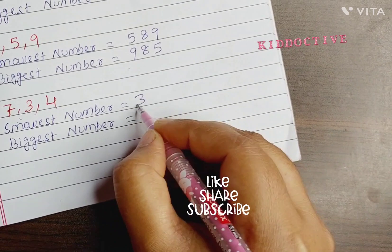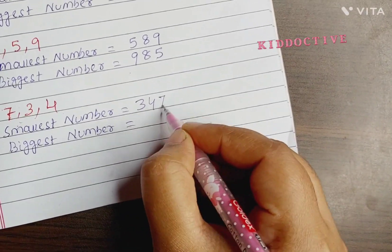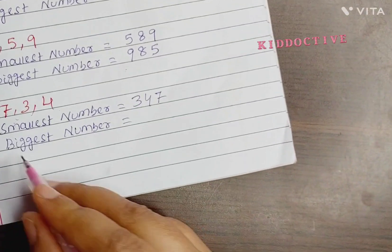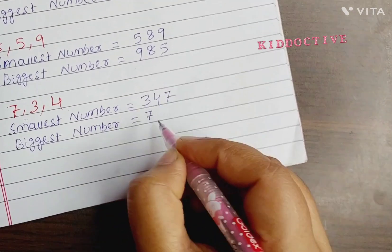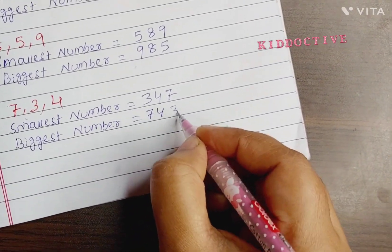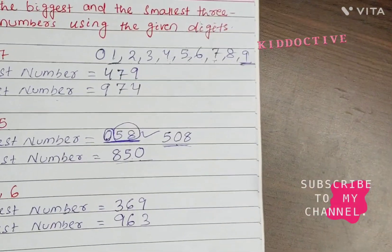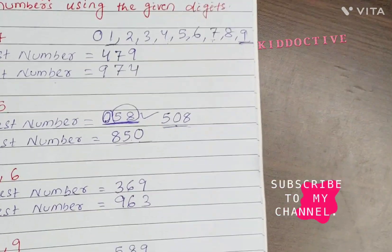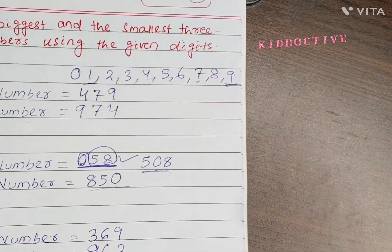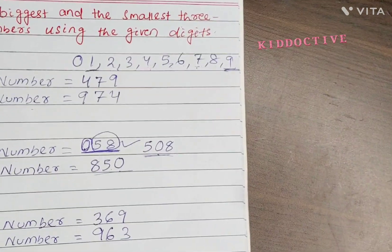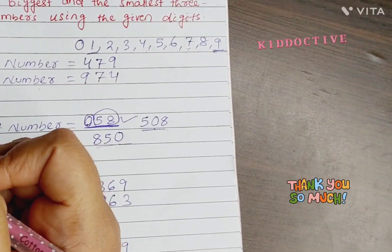Now coming to digits 7, 3, and 4 — smallest number: 3, 4, 7 — so 347. Biggest number: 7, 4, and 3 — so 743. I hope from these examples you understood the concept of making numbers from the given digits.